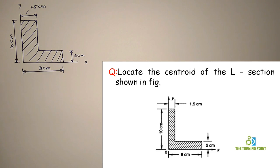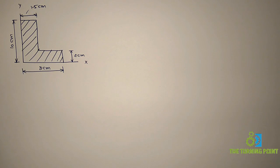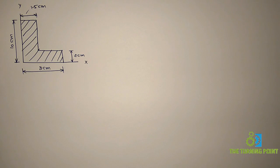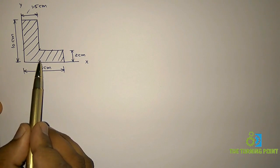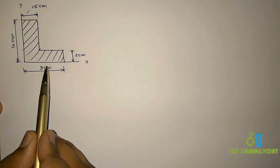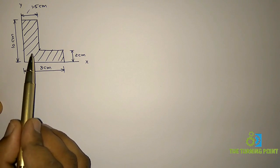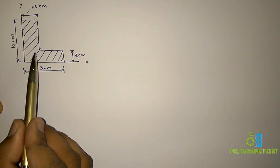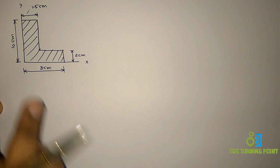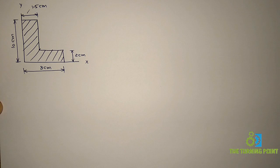So this is the given section. For this section we have to calculate the centroid. When you are going to calculate the centroid, the first thing you need to do is identify the basic geometries in the given section. This is nothing but a combination of two rectangles. So this is one rectangle and this is another rectangle. If I add those two rectangles I will have this shaded area. I will divide the given geometry into two known geometries — two rectangles.